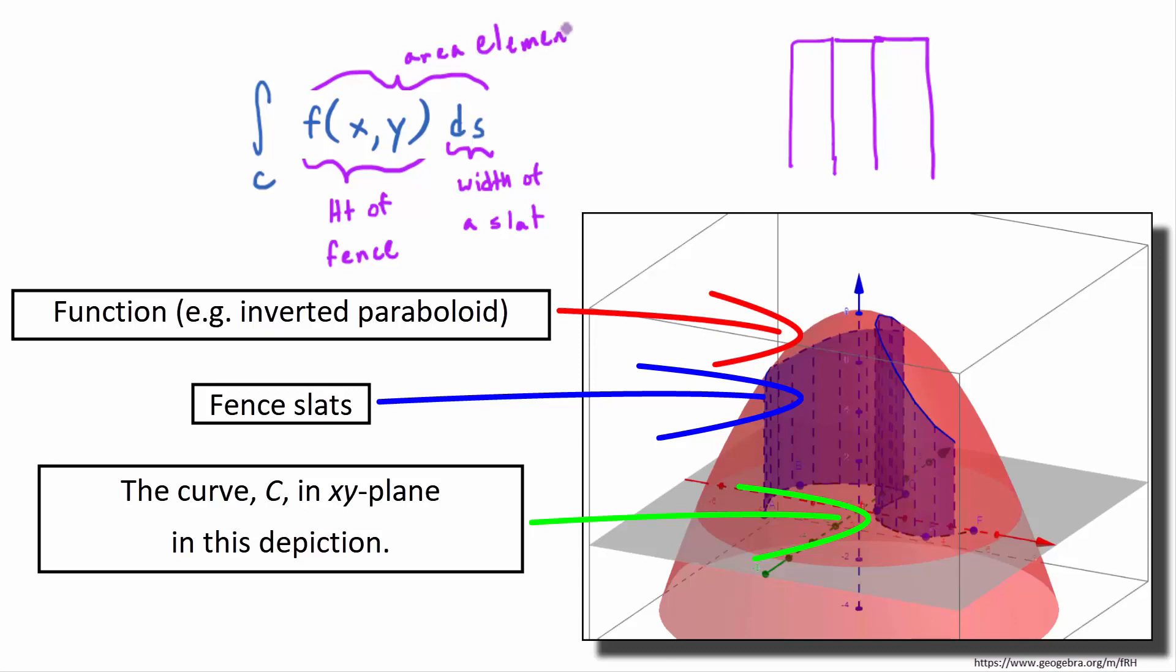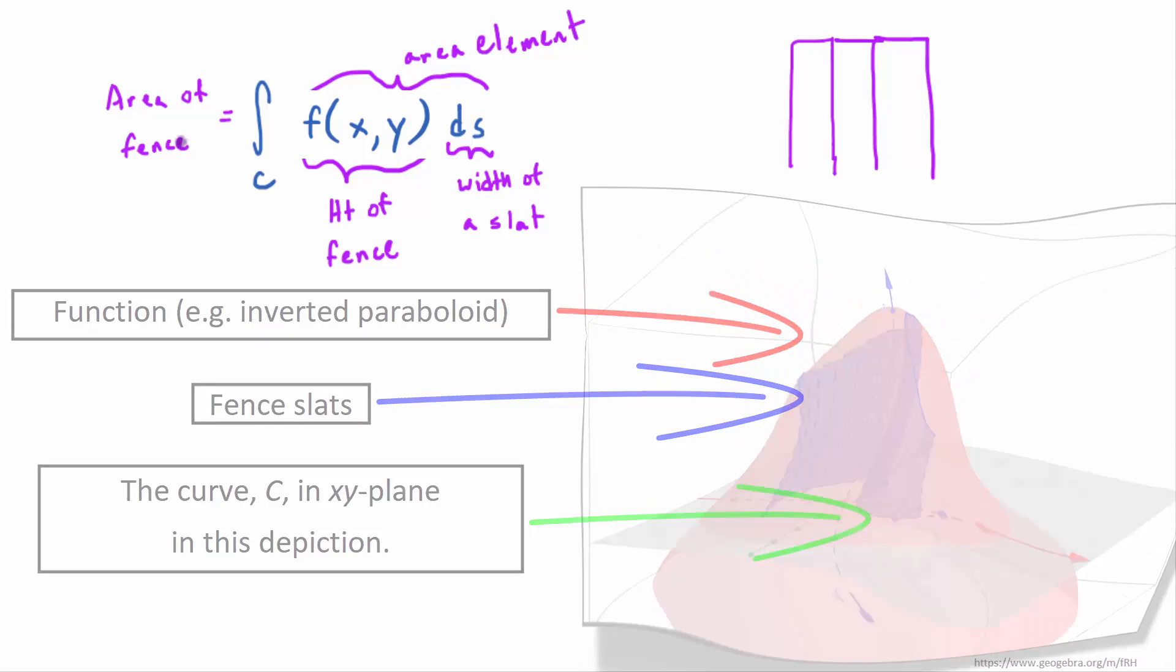So when you add all of those area elements together, you'd get the area at least of one side of your fence. If you want to paint both sides, you've got to double it. All right, I don't know how useful that is, but that's one way of thinking about it. Here's another.